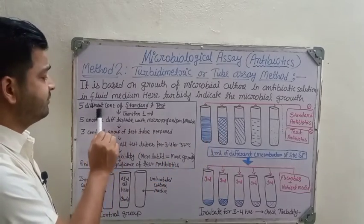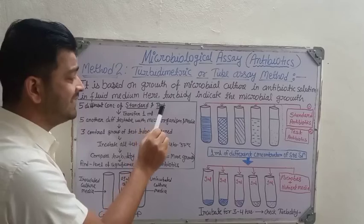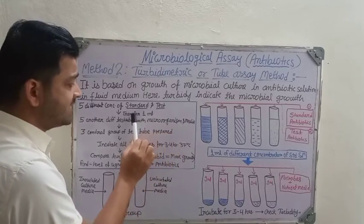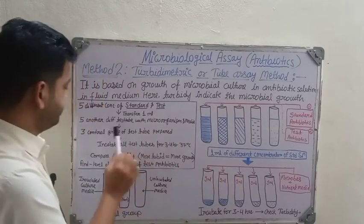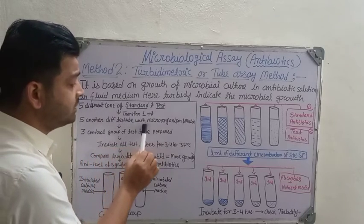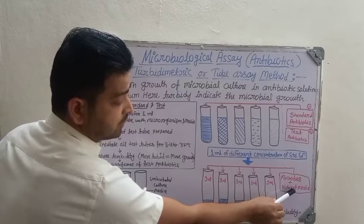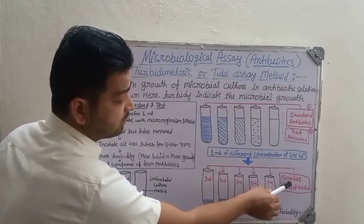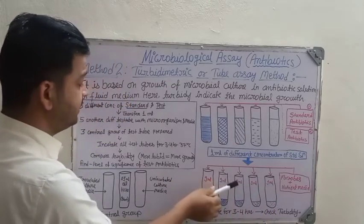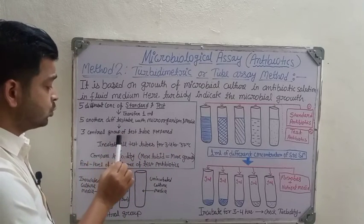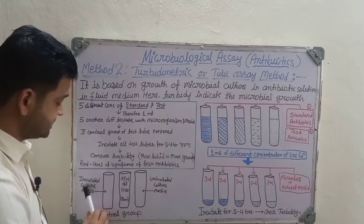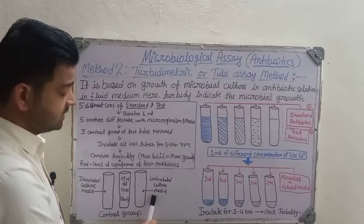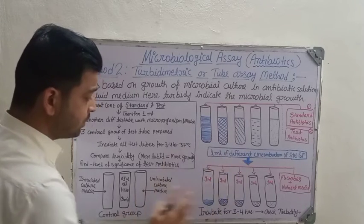More turbid means more microbial growth; less turbid means less growth — that is the core principle. So in summary: five different concentrations of both standard and test antibiotic are prepared. One ml is transferred into new test tubes containing 9 ml of nutrient media and microorganism, totaling 10 ml. Three control group test tubes are also prepared: inoculated culture media, formaldehyde blank, and uninoculated culture media.